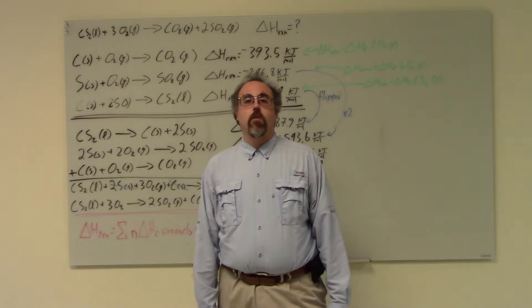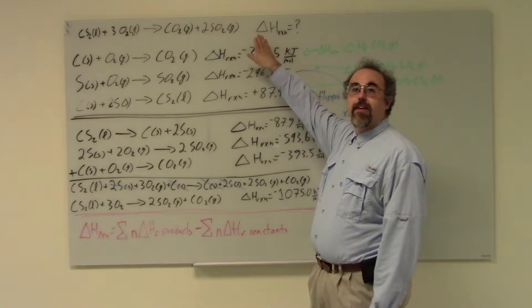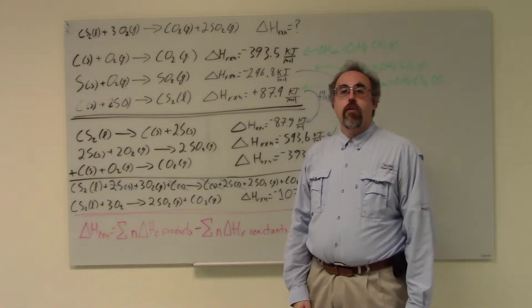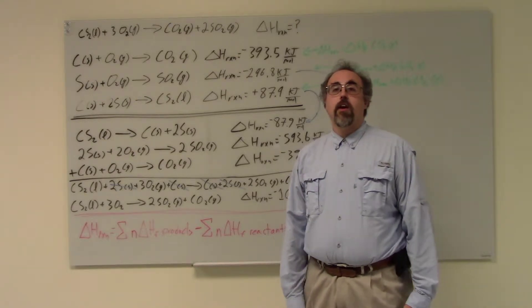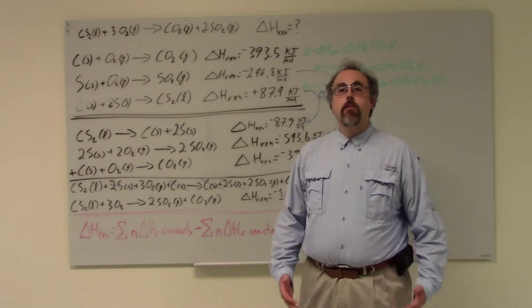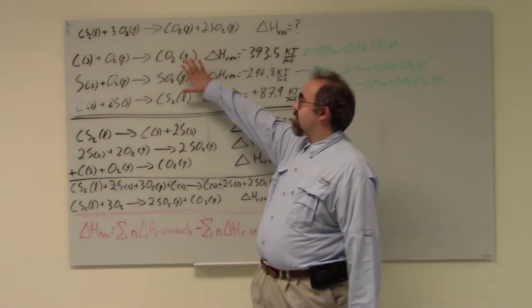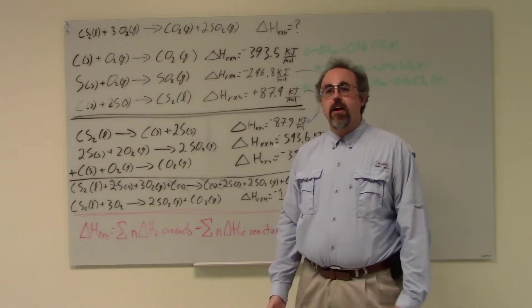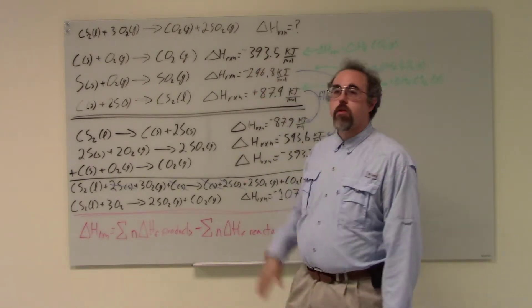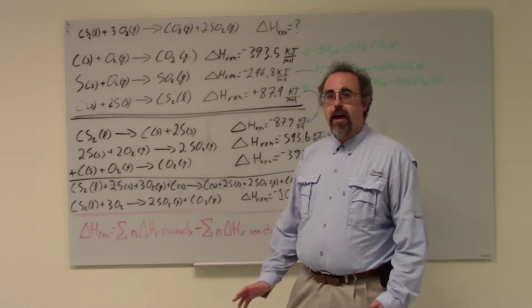So there's a couple of ways of acquiring a delta H of a reaction when you don't necessarily know it. The first is what we call Hess's Law. And in this case, I'm going to take a reaction that I don't know the delta H for, and I'm going to find that by finding other reactions which I do know the delta H for, and then adding them up together.